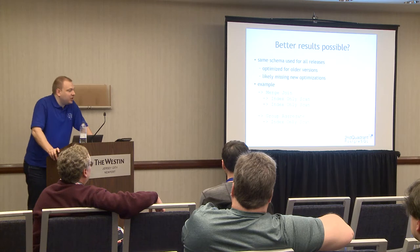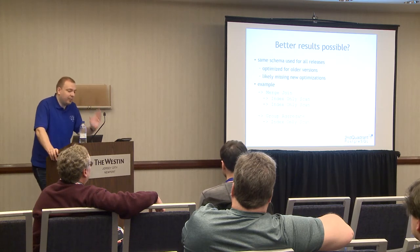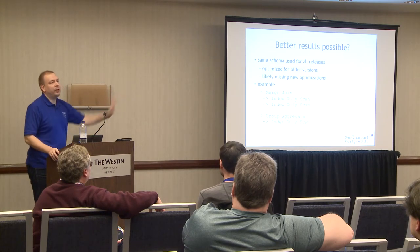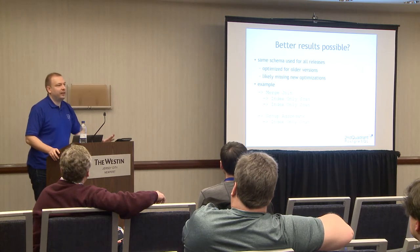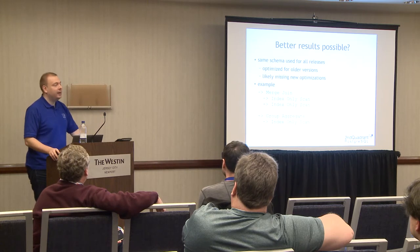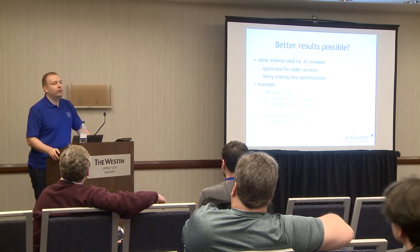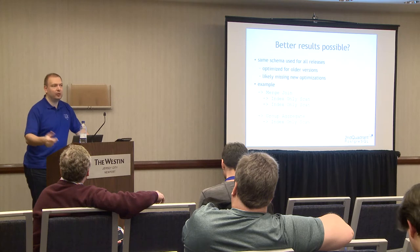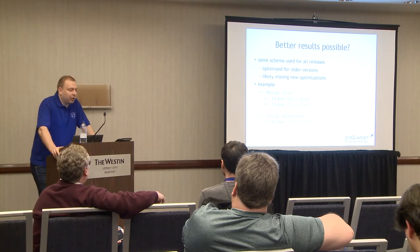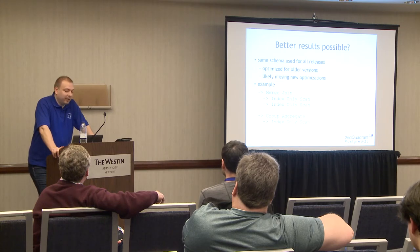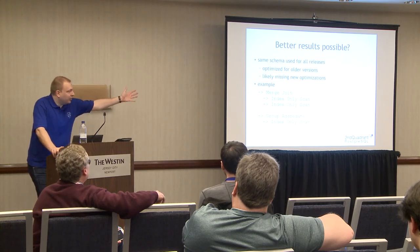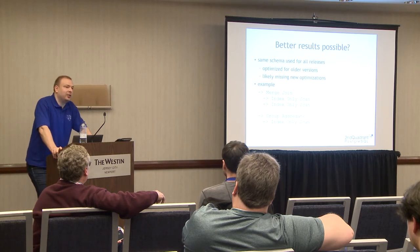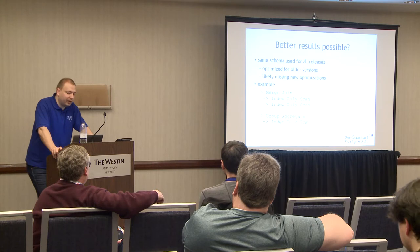One thing I should mention: I'm pretty sure we could get better benchmark results because across all versions I used the same schema, effectively optimized for 9.1. We could improve by using partial indexes, designing indexes for index-only scans, and so on — that's not included in this version of the talk, but hopefully next time it will be. That would allow plans like merge join with two nested index-only scans, or group aggregate with an index-only scan.